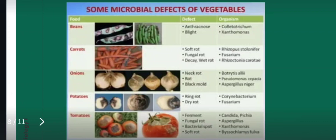Similar to fruits, there are various pathogenic microorganisms which not only spoil vegetables but also infect them during pre- and post-harvest periods. Different types of microorganisms attack various vegetables — for example, beans, carrots, onion, potatoes, and tomatoes — causing different infections such as soft rot, fungal rot, decay, neck rot, black mold, ring rot, and dry rot.